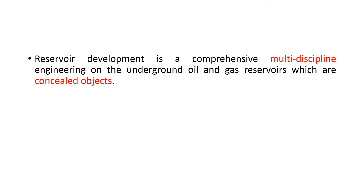It says multidisciplinary engineering — so what does that mean? It means that it contains most of the engineering aspects and most of the engineering areas. You can find too many different things from different sciences and different engineering inside petroleum engineering — from chemical engineering, from mechanical engineering, and from geology as well, even though it's not engineering. Too many different things just combine together, and we basically use them for reservoir development.